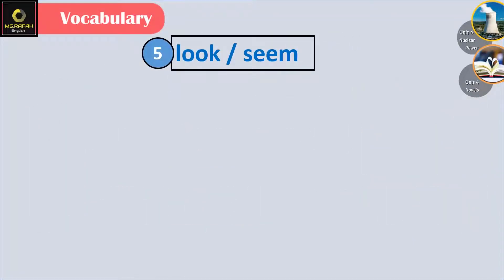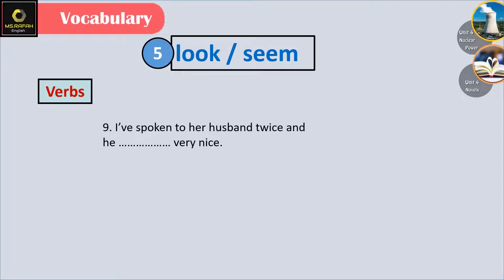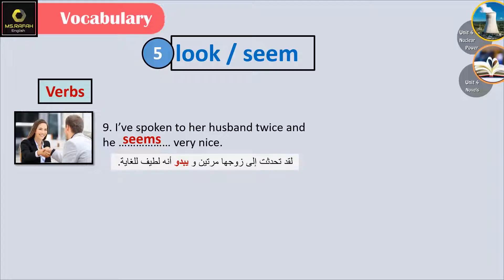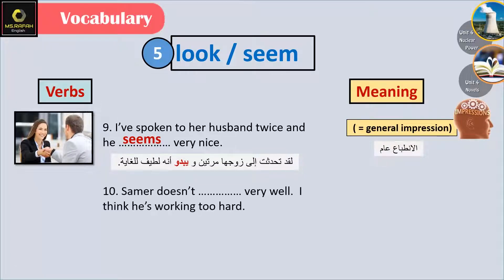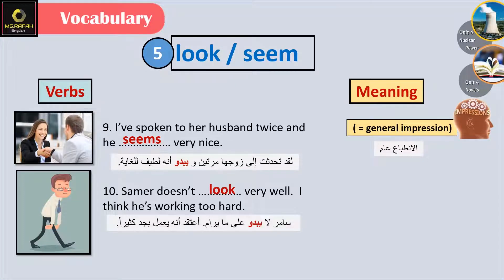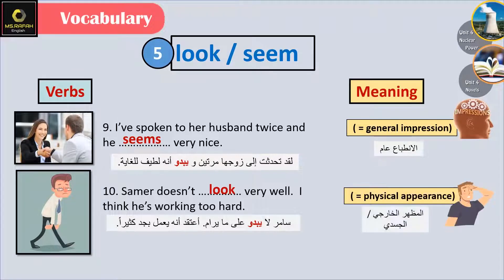Number 5: look vs. seem. 'I've spoken to her husband twice and he seems very nice.' This gives a general impression. 'Samir doesn't look very well. I think he's working too hard.' Look refers to physical appearance — what you can see.